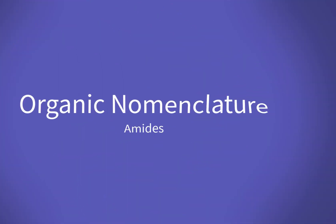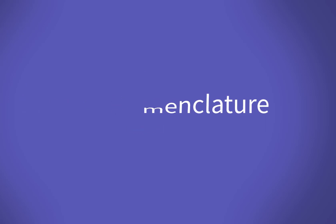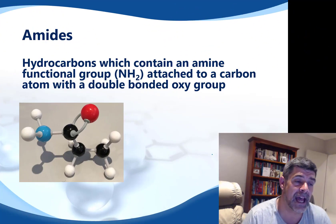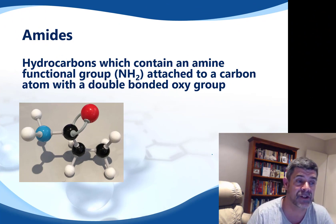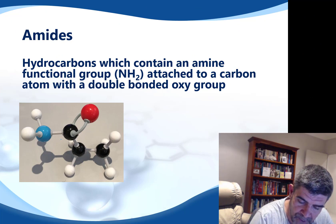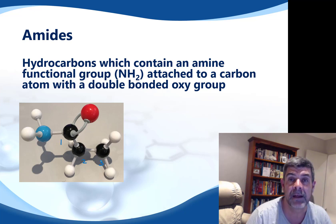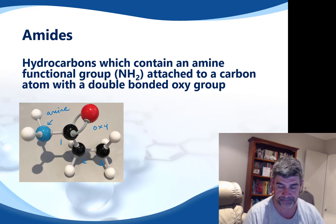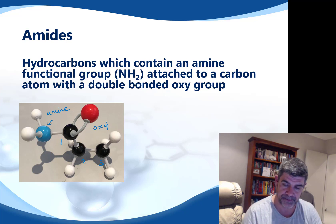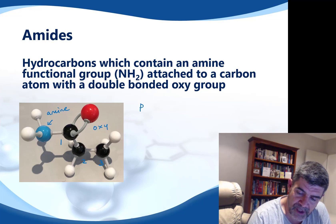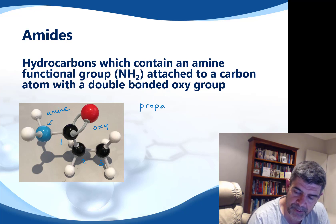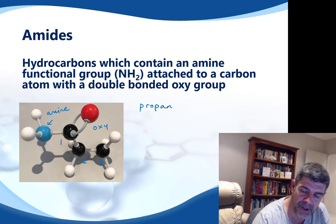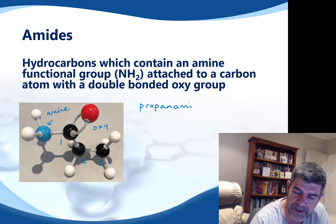Let's have a look at the amides. The only difference between an amine and an amide is that the carbon to which the amine group is attached is also attached to a double-bonded oxygen. Looking at the example here, which has three carbons, the number one carbon is attached to both the amine group and the double-bonded oxygen. The naming is the same: three carbons gives prop, single bonds gives propan, and because this time it has the double-bonded oxygen it becomes an amide — so this is propanamide.